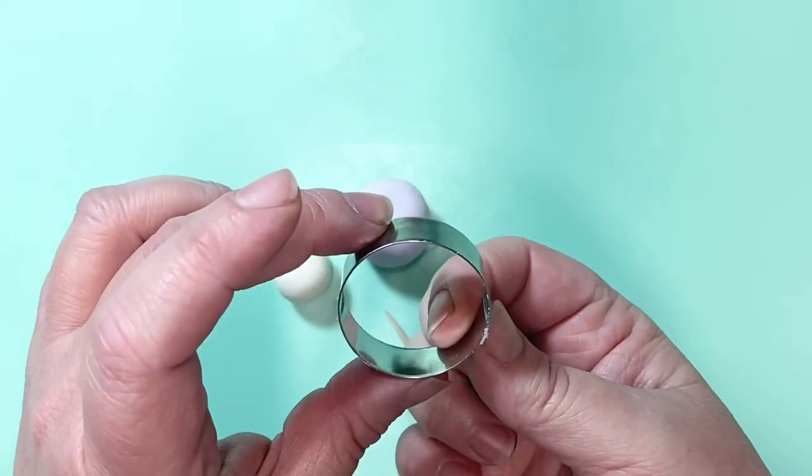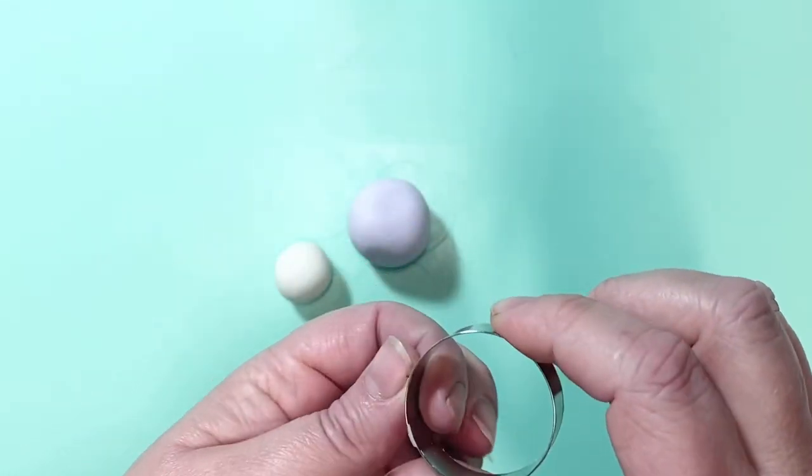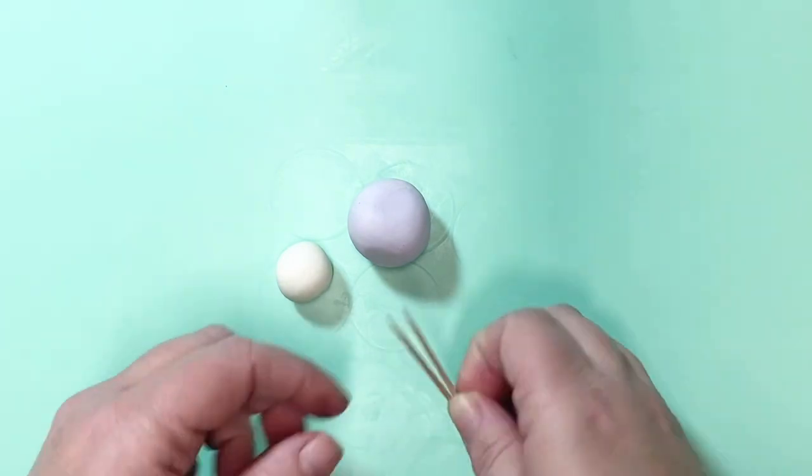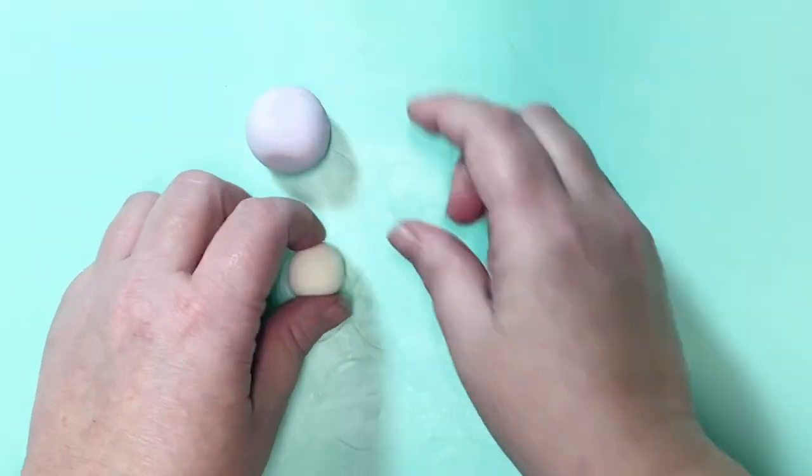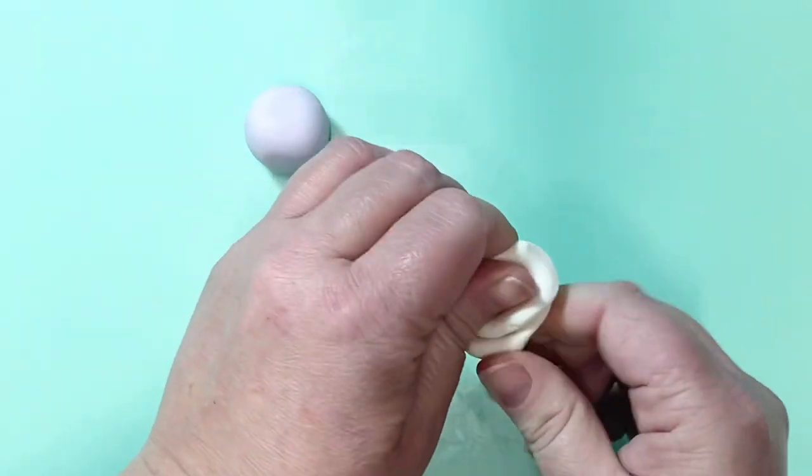A round cutter, this is two and a half inches. You only need one size per rose, this is medium. Cocktail sticks for the bud and for curling your petals, and some petal paste. I use Renshaw flower modeling paste.